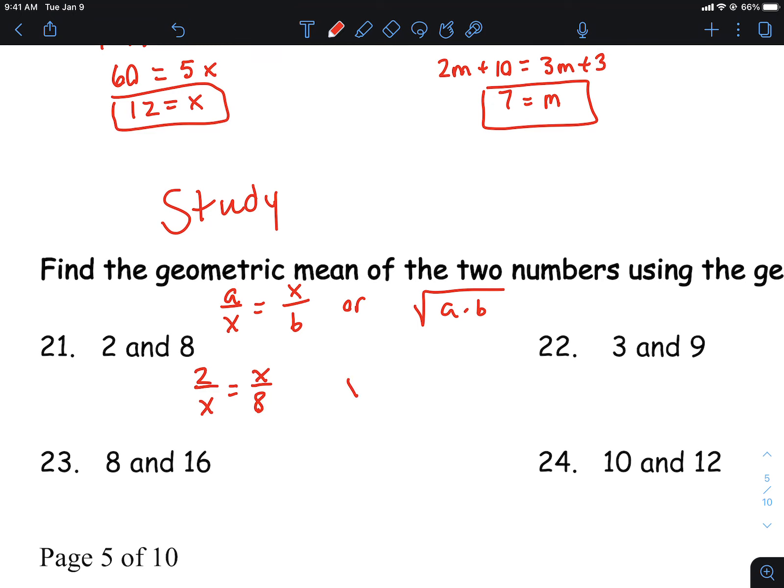So like on this first one here, you can write it like this. It's 2 and then over x, and then x over 8. And then when you cross multiply, x times x is x squared. 2 times 8 is 16. And then you will do the square root of both sides, which is square root of 2 times 8 right there, which is 16. And then that's going to come out to 4.